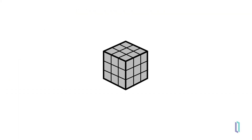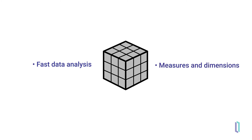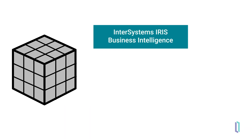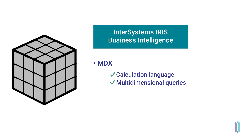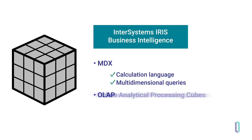When you design a cube, you are creating a data structure that allows for even faster data analysis. Cubes optimize the most common access to the data and make it available for analysis by creating measures and dimensions instead of rows and columns. InterSystems' IRIS BI uses a query language called Multidimensional Expressions, or MDX, which uses a database management system. The MDX query language is a calculation language with syntax similar to spreadsheet formulas, and it can process multiple dimensions in queries. MDX is used for online analytical processing cubes, or OLAP cubes.